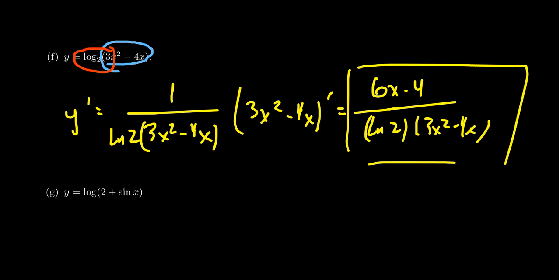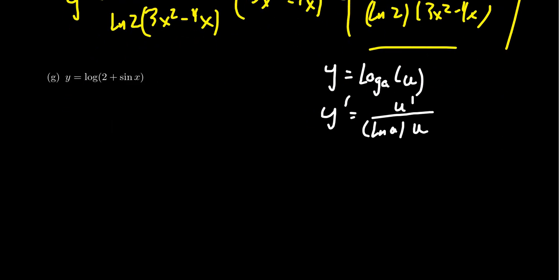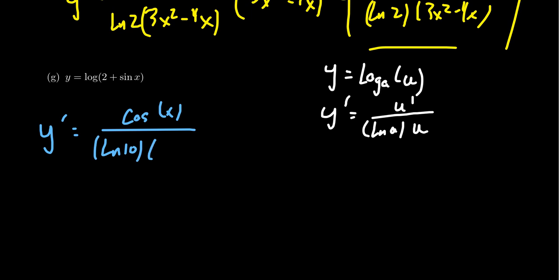We can generalize this principle: if your function looks like y equals the log base a of u, where u is some function of x, then y prime equals u prime over the natural log of a times u. It's just like computing the derivative of a natural log, but because it's log base a rather than log base e, you have to pay the tariff for not using the currency of calculus, which is base e. For example, y equals log of 2 plus sine x — common log, base 10. The derivative y prime has the derivative of 2 plus sine x in the numerator: derivative of 2 is 0, derivative of sine is cosine x. The denominator is the natural log of 10 times 2 plus sine of x.